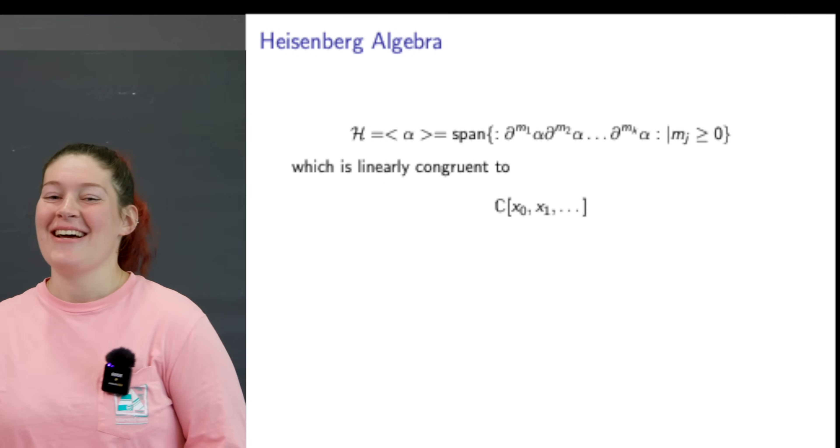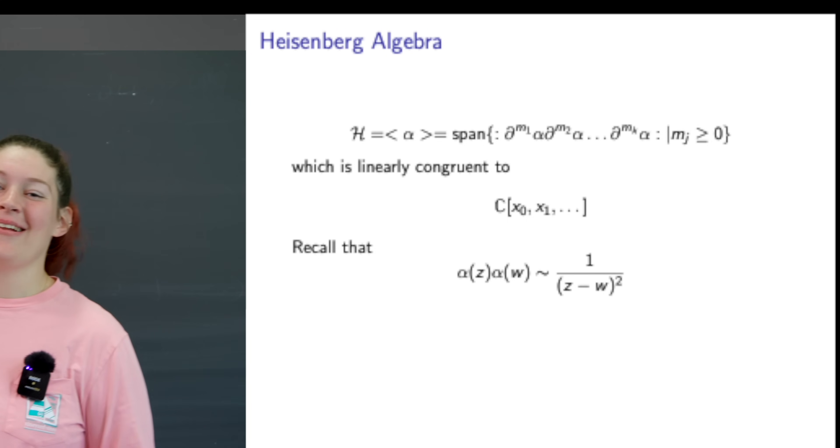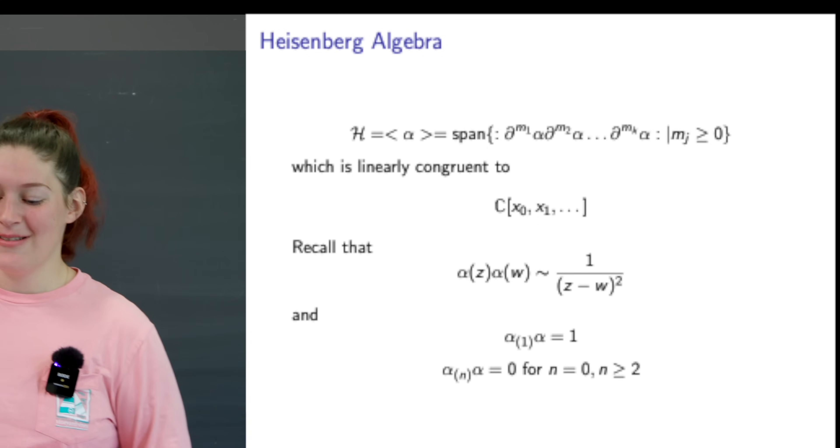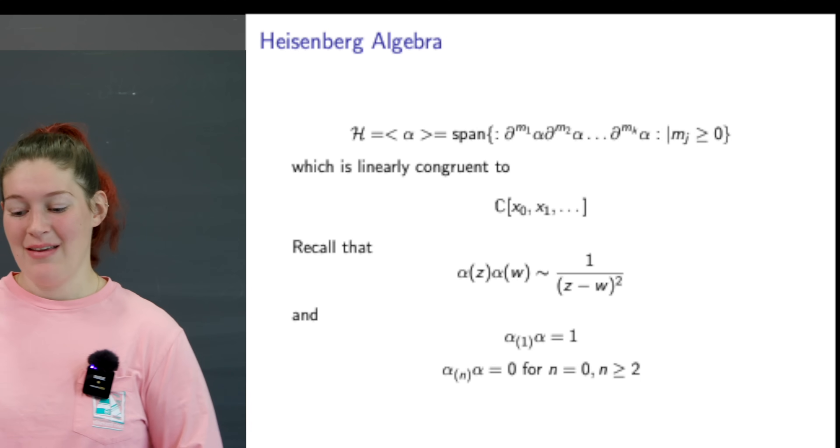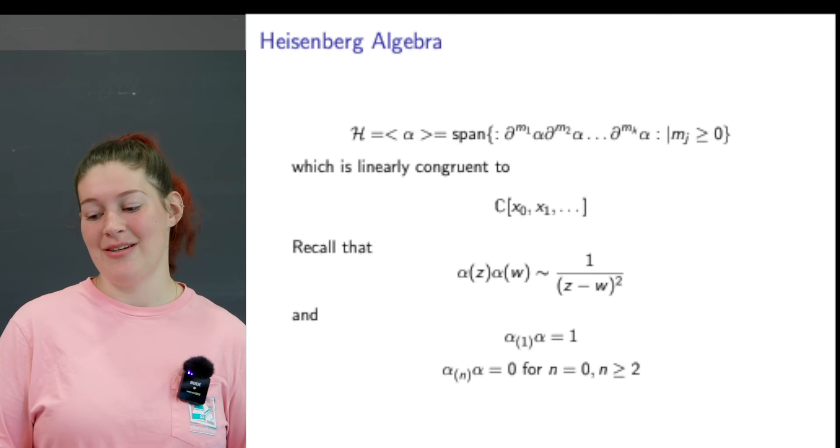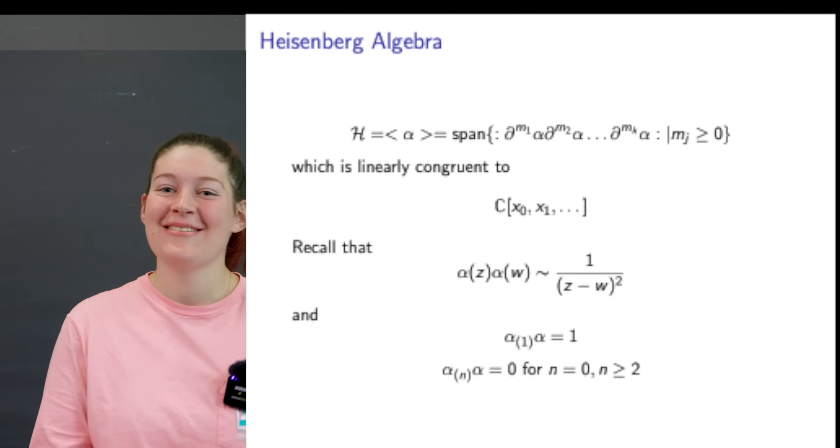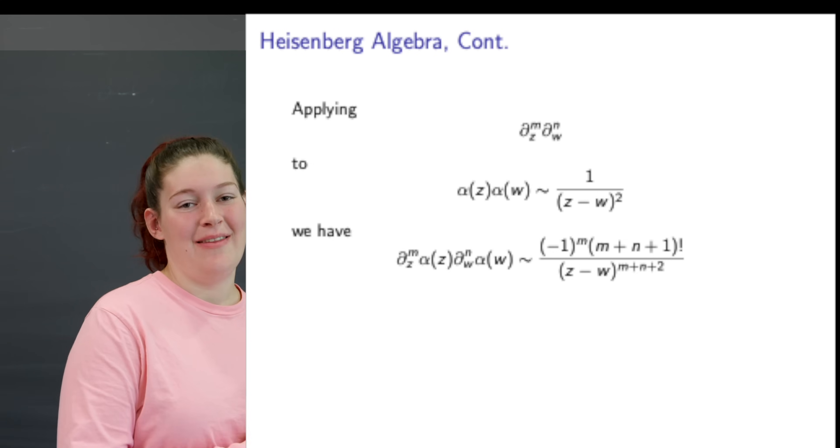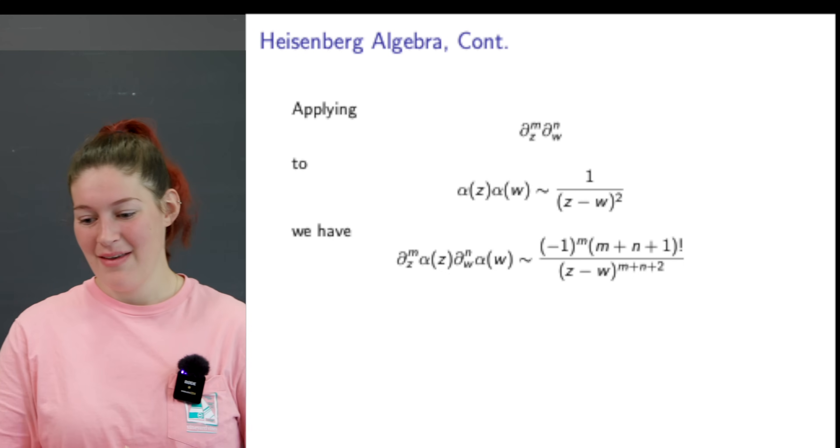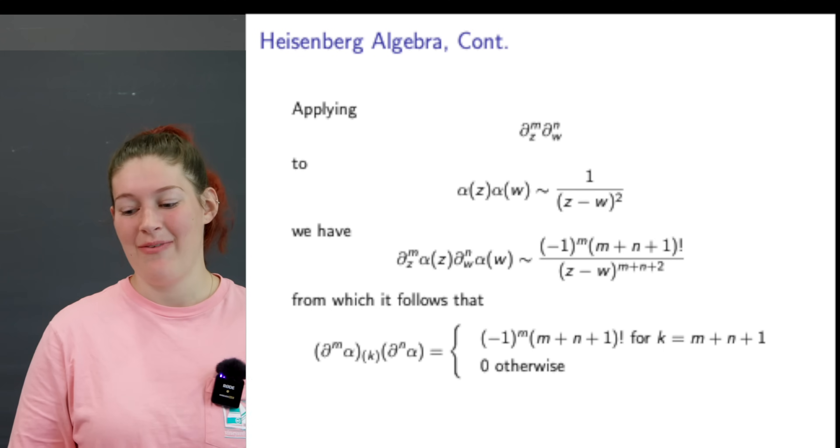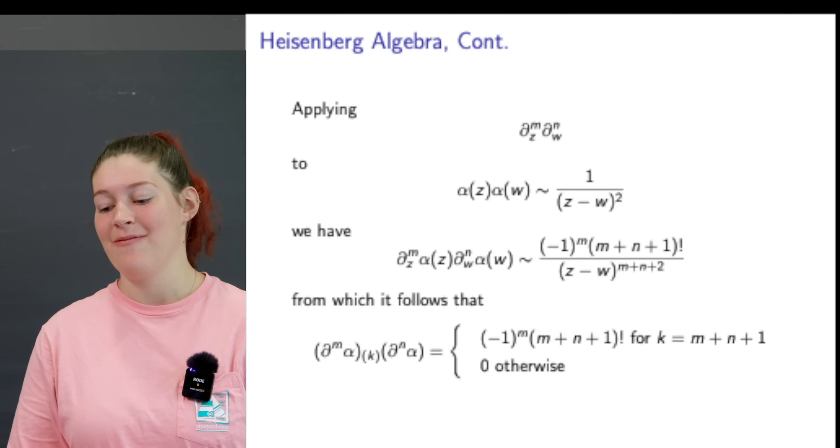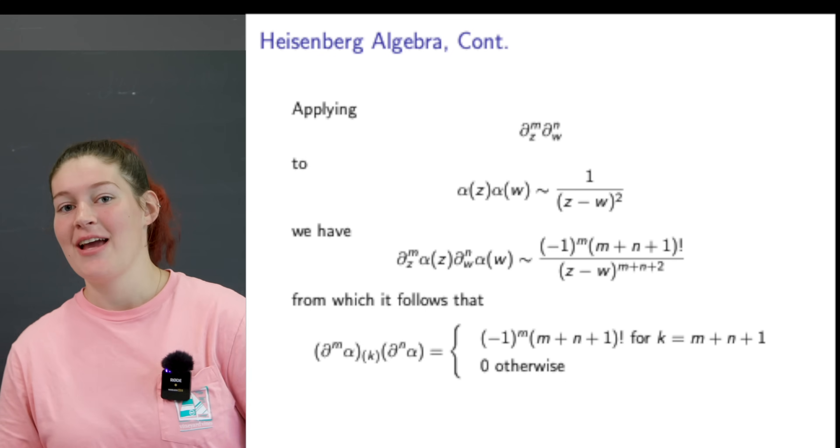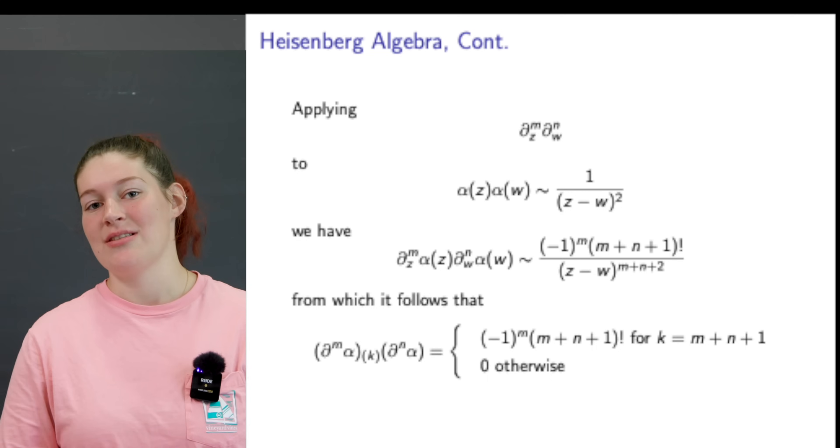Recall that the operator product expansion of alpha has a second-order pole which we take to be one, and that alpha_1 times alpha is one, and alpha_N times alpha is zero for N equals zero or N greater than or equal to two. Applying this derivative operator, we can build the operator product expansion for the Mth derivative of alpha and the Nth derivative of alpha, which gives us a piecewise function.